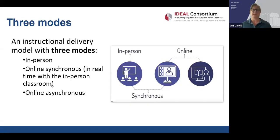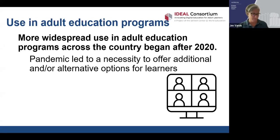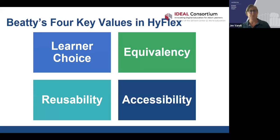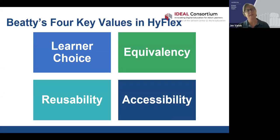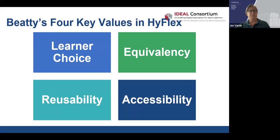We were really curious about what was going on in adult education programs, and we wanted to give an overview of the principles of HyFlex. There are four important principles. First, learners need to have choice about place or timing. Second, the instruction that happens — whether synchronous online, in-person, or asynchronous online — needs to be equivalent. It doesn't need to be exactly the same thing, but it should cover the same learning objectives and give some approximation of the different types of activities.